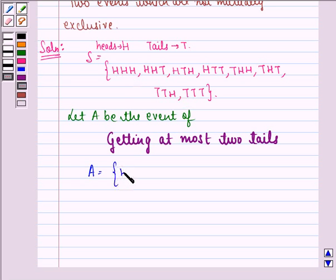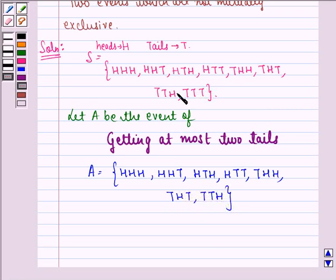That is HHH. This is the sample space for the event A. That will be HHH, HHT, HTH, HTT, THH, THT, and TTH. We will not consider TTT because there are 3 tails, i.e. more than 2.